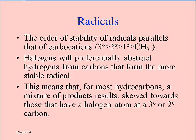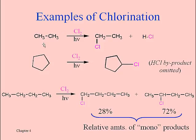Depending on the type of alkane we're using, we may only get one possible product when we chlorinate it or brominate it, but we can also sometimes get mixtures. In these first two examples, we only get one possible chlorination product, assuming we're only adding one chlorine at a time. For ethane, all six of those hydrogens are equivalent — it doesn't matter which one I substitute, I'm going to get chloroethane. Likewise, cyclopentane has 12 hydrogens, all of which are equivalent, so substitution gives chlorocyclopentane. The hν refers to a photon of ultraviolet light, because that light gets us started by breaking the two chlorines into radicals.